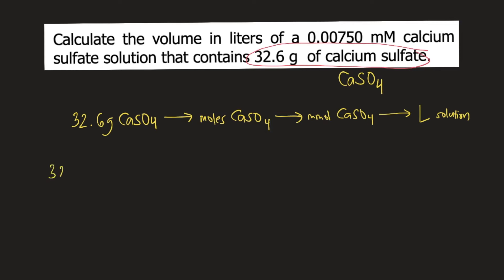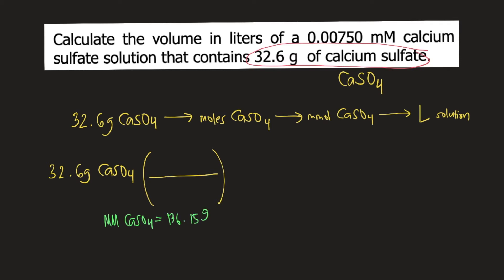So we start with 32.6 grams of calcium sulfate. In order to convert this into moles, we need the molar mass of calcium sulfate, which is 136.15 grams per mole. So you put 136.15 grams of calcium sulfate on the bottom and one mole of calcium sulfate on top, so grams of calcium sulfate will cancel.